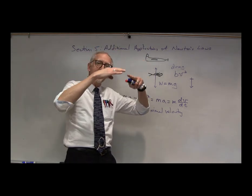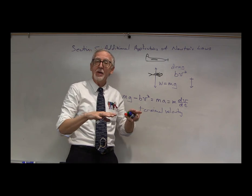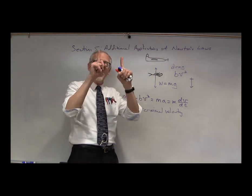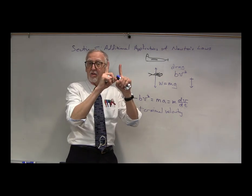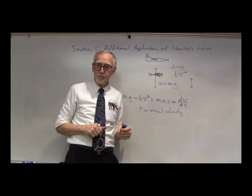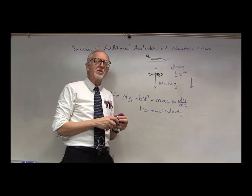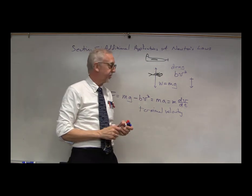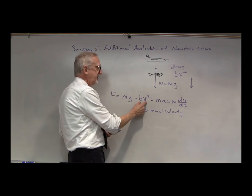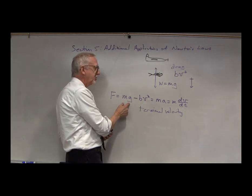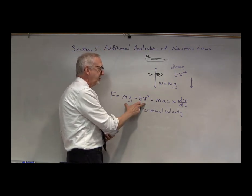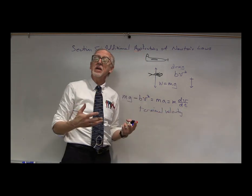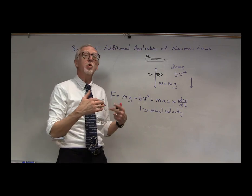Terminal velocity is the fastest the person will be falling. They speed up, speed up, speed up, but eventually they stop speeding up because at that point their weight is balanced by the drag force. What if the person were actually falling faster than their terminal velocity? In that case, this term would be larger than mg, and dv/dt would be negative, which means v would slow down.